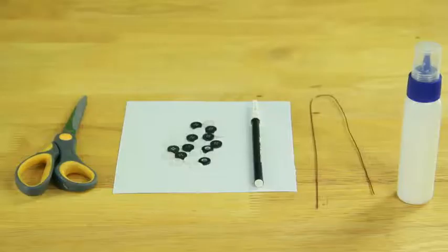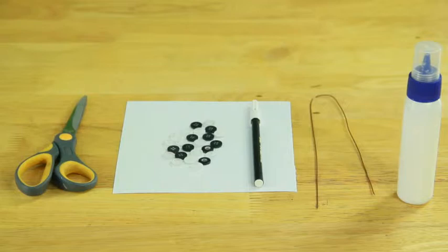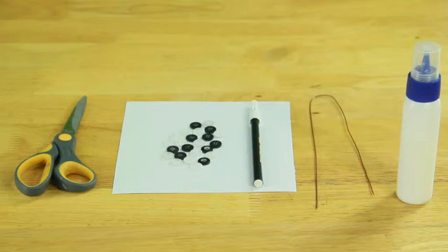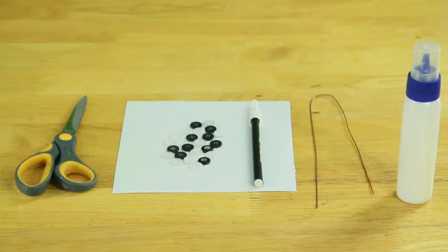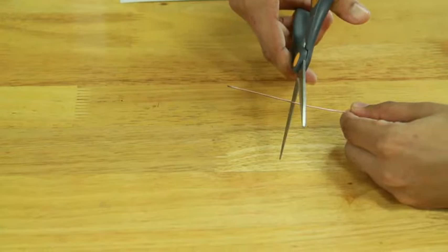Button caterpillar. To make the button caterpillar, you will need buttons, copper wire, sketch pens, chart paper, craft glue, and scissors. First, take a copper wire and cut it into six long strips.